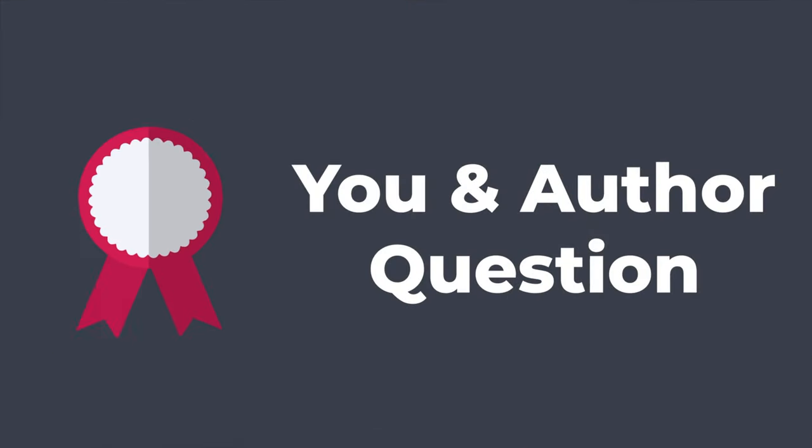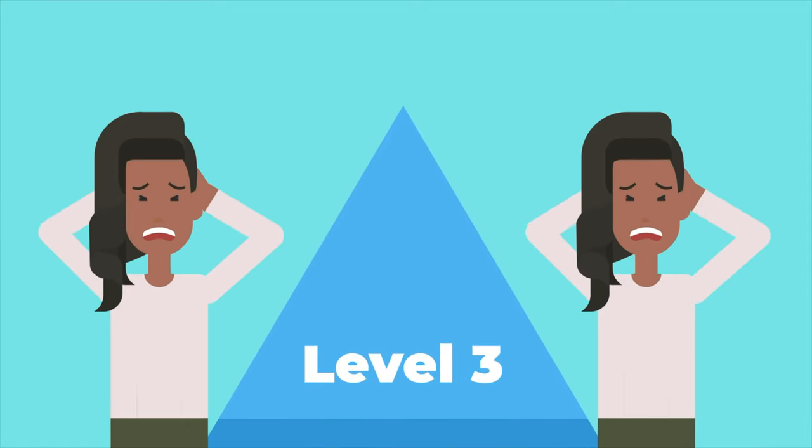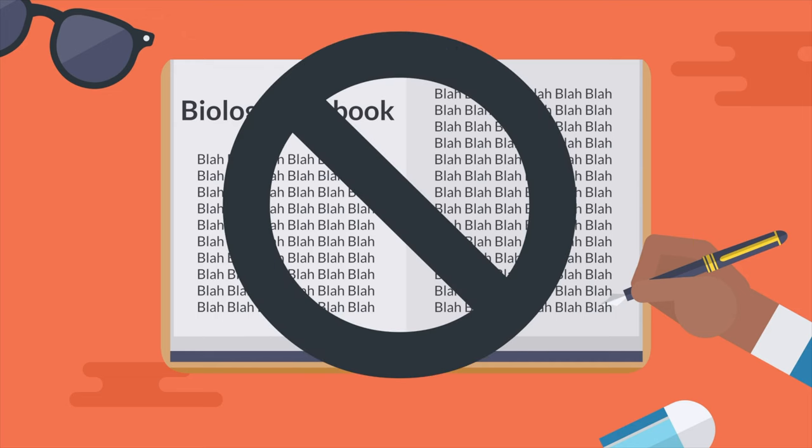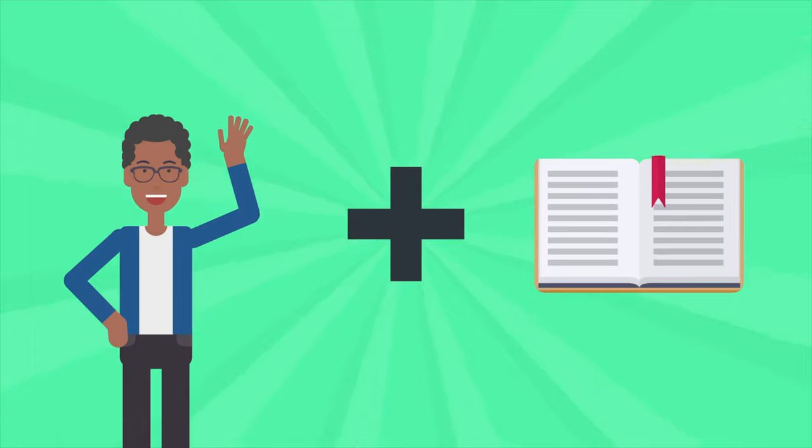We call a Level 3 question a you and the author question. It is important to know that just because it's a Level 3 question does not make it the toughest question to answer. The answer to a Level 3 question is not found in the book or article that you're reading. It comes from your experience or life. The goal of a Level 3 question is to take some information from the book and apply it to your life.